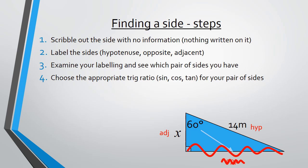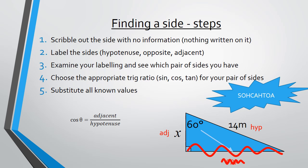The 4th step is to choose the appropriate trig ratio, sin, cos, or tan for our pair of sides. Now, SOHCAHTOA is coming in handy here. If you write it at the start of every page on your test or on your exercise book, that's not going to hurt. So we're looking for the ratio that has adjacent and hypotenuse, which hopefully we can see is cos. Cos theta equals adjacent over hypotenuse.